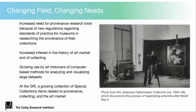At the GRI and at other institutions, there's a growing number of special collections items related to provenance collecting in the art market. You're seeing an image here from the Felbermayer collection — photos taken at the Allied Central Collecting Point in Munich, documenting the process of repatriating artworks looted by the Nazis. We also have papers of art collectors, of lawyers who worked on provenance cases, dealer archives containing stock books, letters, telegrams and other correspondence, photos of their holdings, and exhibition histories. Inventories and auction catalogs are still useful, but dealer archives are really where the most new data is entering the field.